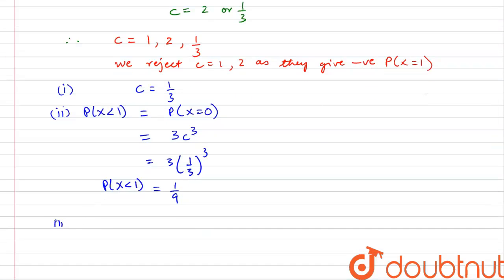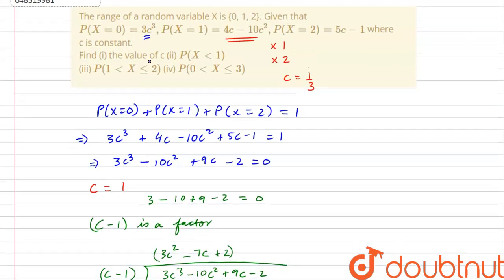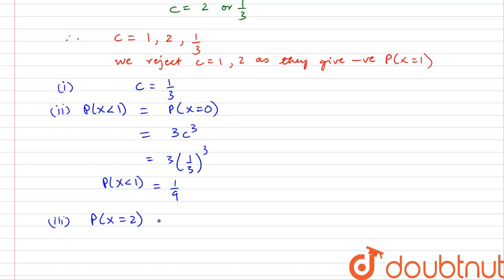In the third part, we need to find the probability that x lies between 1 and less than or equal to 2. The only value x can take in this range is x = 2. P(x = 2) = 5c - 1 = 5(1/3) - 1 = 5/3 - 1 = 2/3. So P(1 < x ≤ 2) = 2/3.